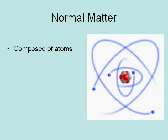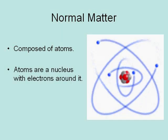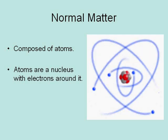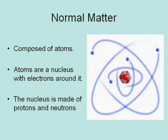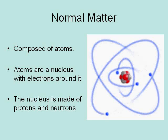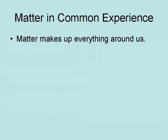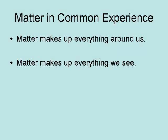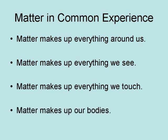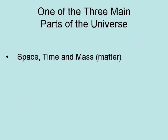Normal matter is composed of atoms. Atoms are a nucleus with electrons around it. The nucleus is made up of protons and neutrons. In common experience, matter makes up everything around us — everything we see, everything we touch, and even our bodies. Matter is one of the three main parts of the universe.